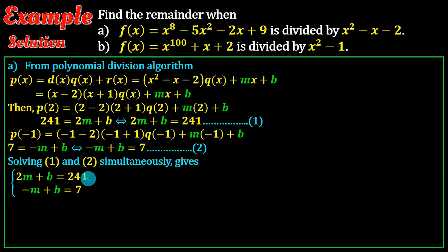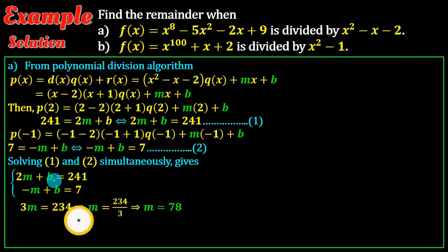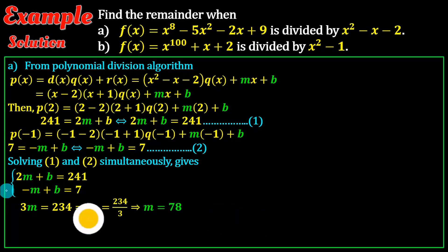We now have the simultaneous equations: m plus b equals 8, and minus m plus b equals 7. We can solve these simultaneously. Adding the two equations gives 2b, so we can find b. Using either equation gives us m.